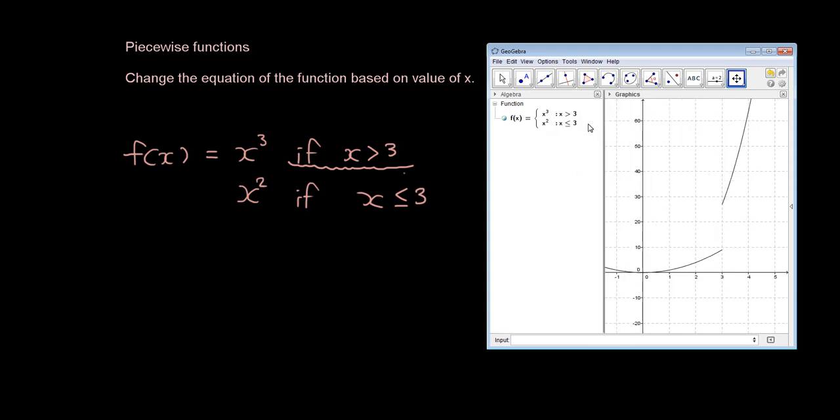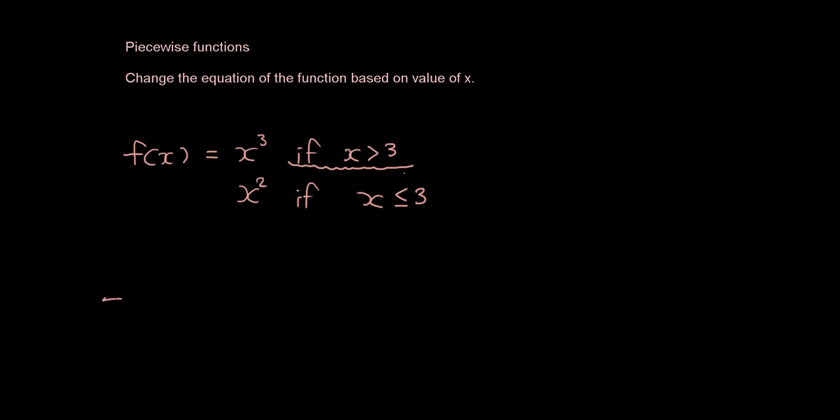So here is the notation for the piecewise function, as you can see GeoGebra has done very nicely for you. So I'll copy that out again here. So f is equal to, and you need a little bracket thing, x cubed when x is bigger than 3, or x squared when x is smaller than or equal to 3.